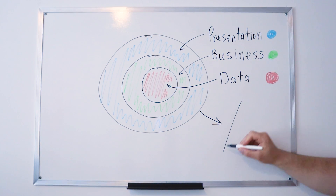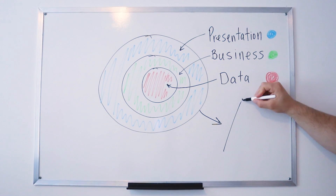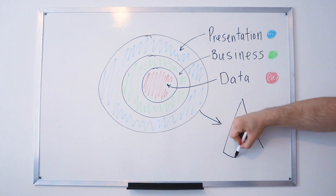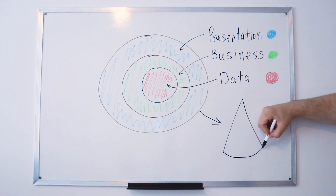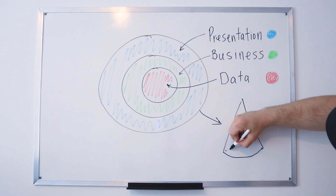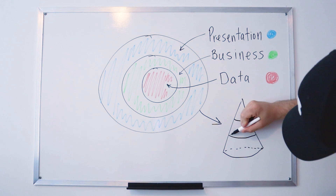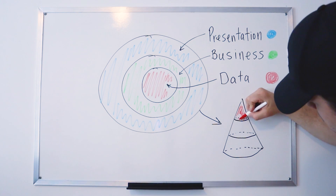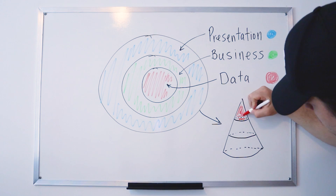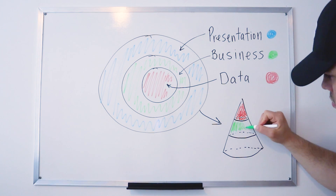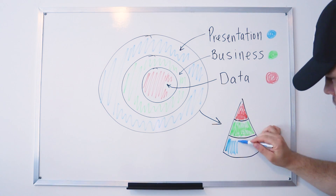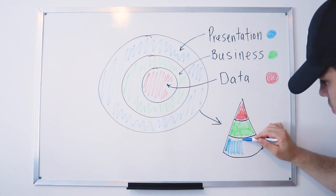The three layers are: the presentation, the business, and the data. Most often, clean architecture is represented by a circle, but you could also think of it as a cone — as if you're seeing it from a bird's eye view — and I think it's simpler to understand as a cone.